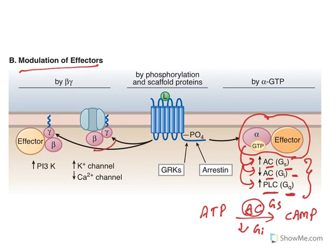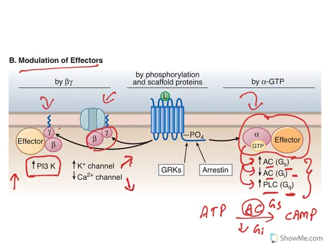The released beta-gamma subunit also has effects. They may open or close potassium channels, or in combination they may activate phosphatidylinositol 3-kinase activity. So it is not just the alpha subunit — the beta-gamma subunit also has activities related to cell signaling, metabolism, and cell multiplication.